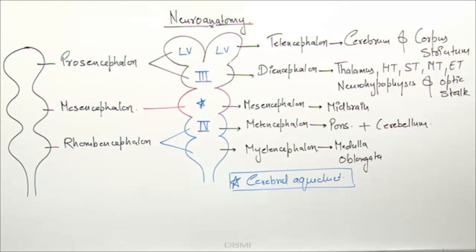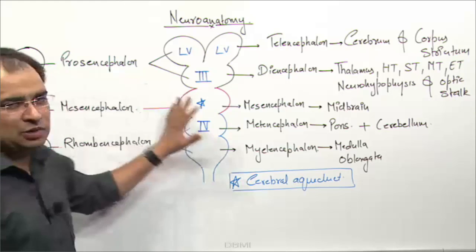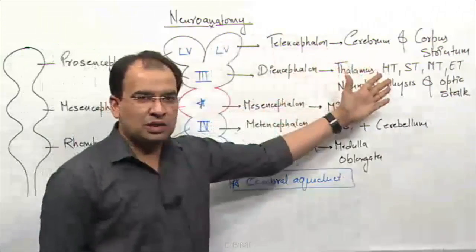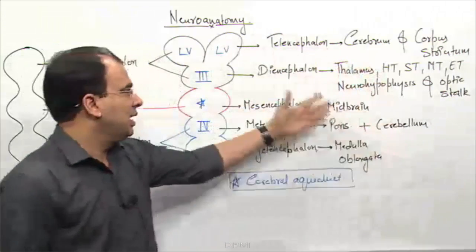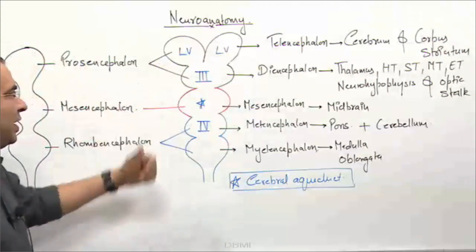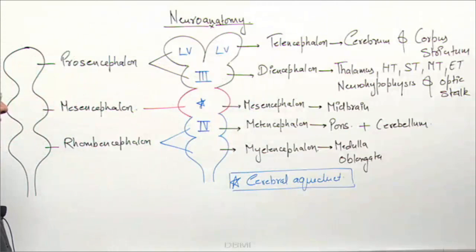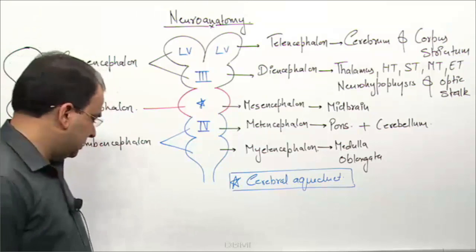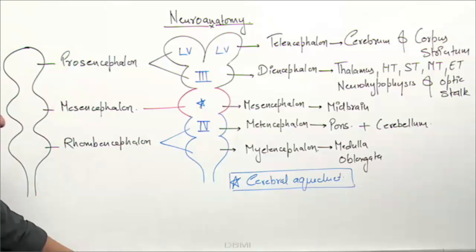So this is about the derivatives of the brain vesicles: the primary converted into secondary brain vesicles. The secondary brain vesicles gave rise to all these structures, and the cavities inside formed the ventricular system — the lateral ventricles, third ventricle, fourth ventricle, and the cerebral aqueduct or aqueduct of Sylvius. Thank you.